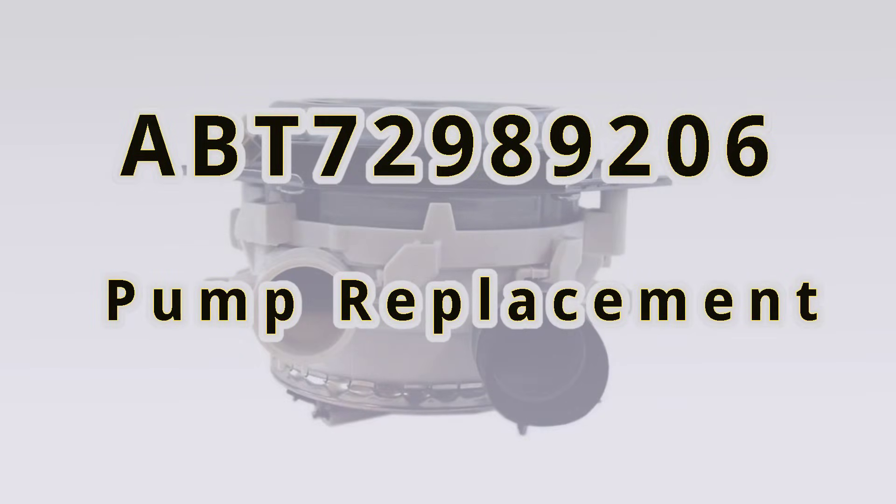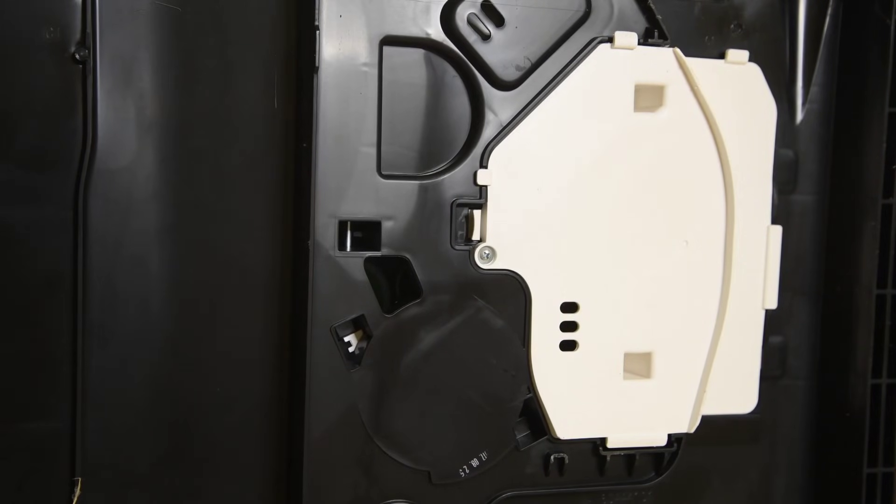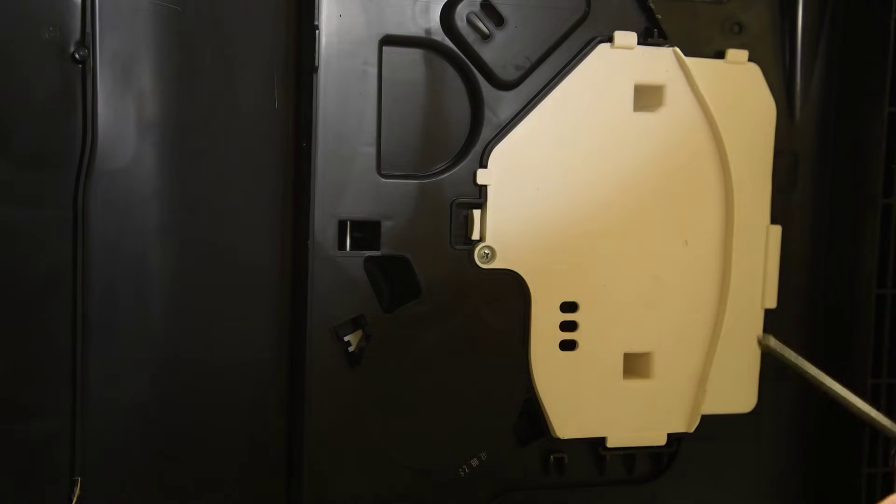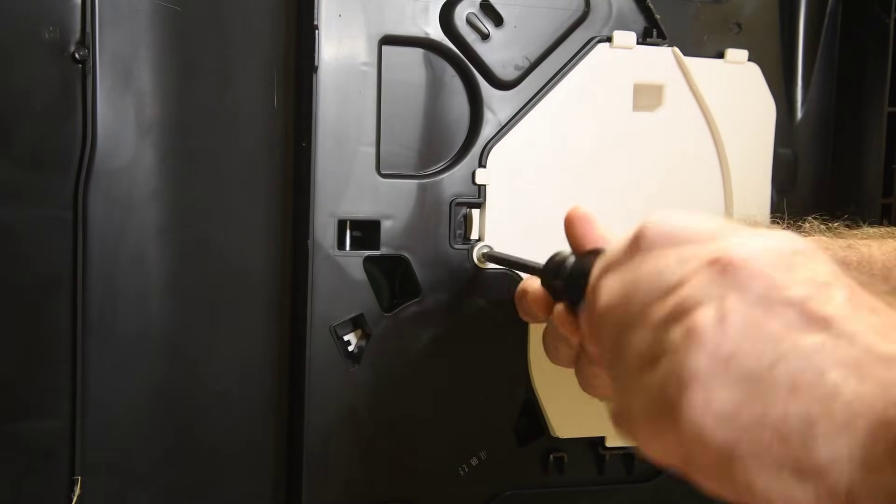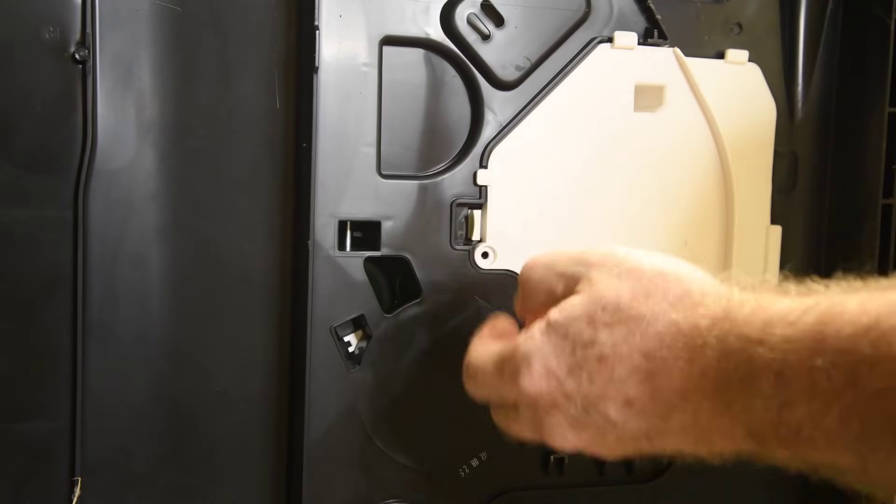Have to disconnect the power and water from the dishwasher. And depending on the drain hose, may have to disconnect that as well. Here, the dishwasher is laying on its back. One screw holds the bottom cover panel on. Removing that will allow access to the pump.